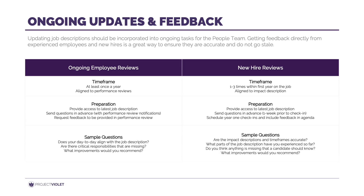A final point is on the ongoing reviews — the last step in this end-to-end process. You don't want your job descriptions to go stale, so refresh them at least on an annual basis. A great time to do this is aligned with annual reviews or check-ins with your employees — put it on the agenda that they review the job descriptions for their role and provide feedback on accuracy and any additions they recommend. They'll already be in the mindset of reviewing their responsibilities and performance. For new hires, ask them to provide feedback throughout the first year to verify accuracy — this is especially important if you include the impact description.